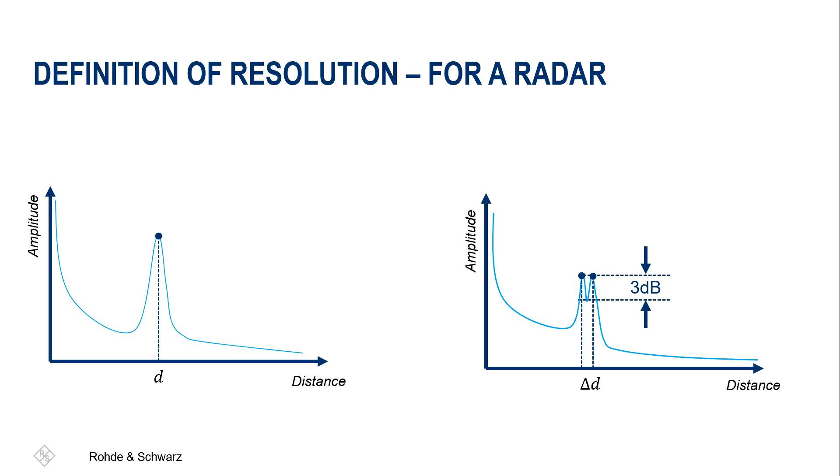To start with, let us have a look at the definition of resolution. Let's start with the definition for a radar. On the left hand side, you can see the typical receiving plot of a radar where we have the distance on the x-axis and the amplitude of the received signal on the y-axis. In this case, we have one clear target which is at a certain distance d and we see that this target is clearly speaking out of the noise.